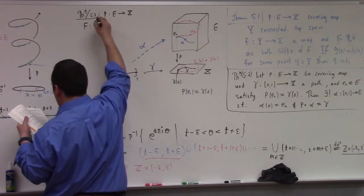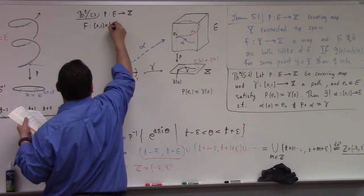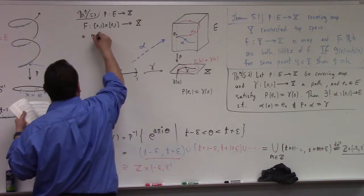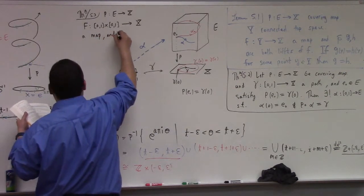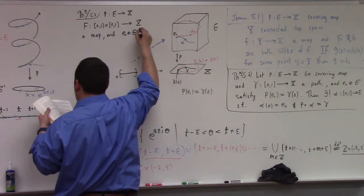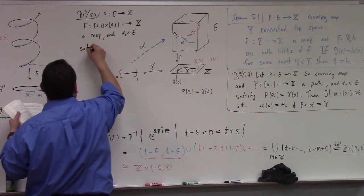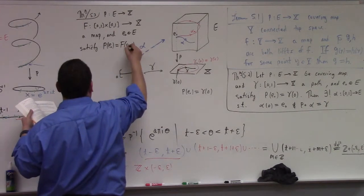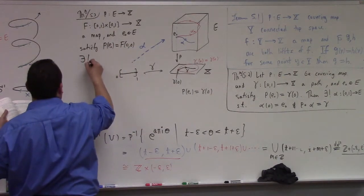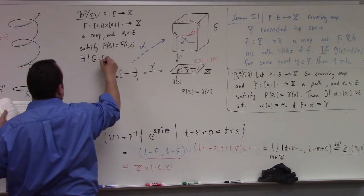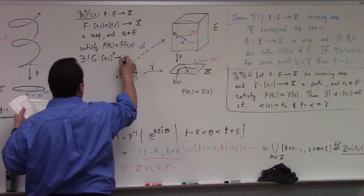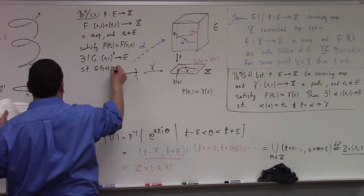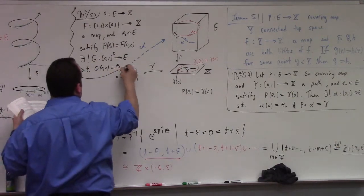I have to write it down because it'll help me find the words to tell you what this theorem is saying. What's this f going from [0,1] × [0,1] into X - what's that? It could be a homotopy, right? e₀ in E satisfying p(e₀) equal to f(0,0). Then there exists unique lift g from [0,1] × [0,1] to E such that g(0,0) is equal to e₀.